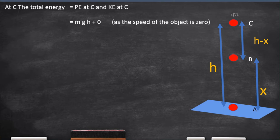Potential energy has become Mgh. But, as the object is in our hands, at rest, the speed is zero. Therefore, the kinetic energy, whose formula is ½Mv², as V is zero, it becomes zero. Therefore, the net mechanical energy at C is equal to Mgh.